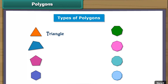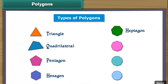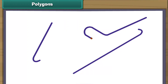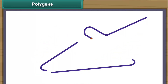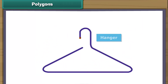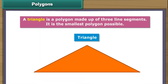They are triangle, quadrilateral, pentagon, hexagon, heptagon, octagon, nonagon and decagon. We take three pieces of plastic and join them to form a towel hanger. We have created a triangle. A triangle is a polygon made up of three line segments. It is the smallest polygon possible.